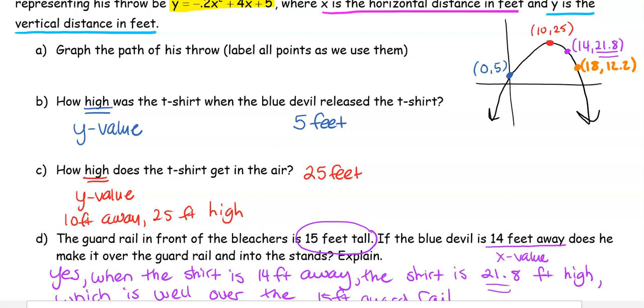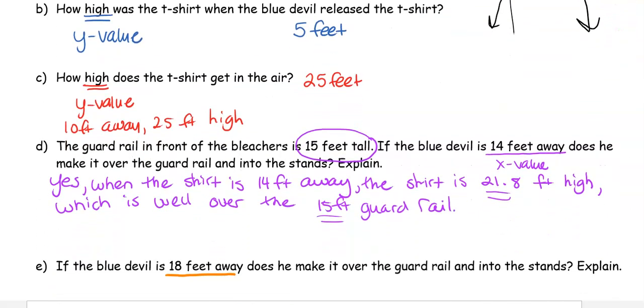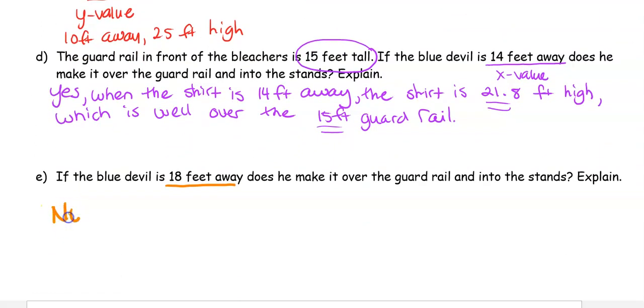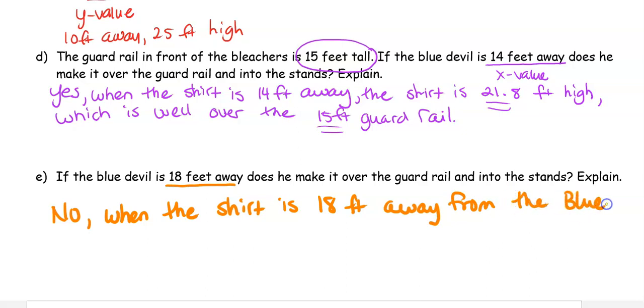Now, is that high enough to make it over the guard rail? Hopefully you're seeing no. So we say no. When the shirt is 18 feet away from the Blue Devil, it is only 12.2 feet high.